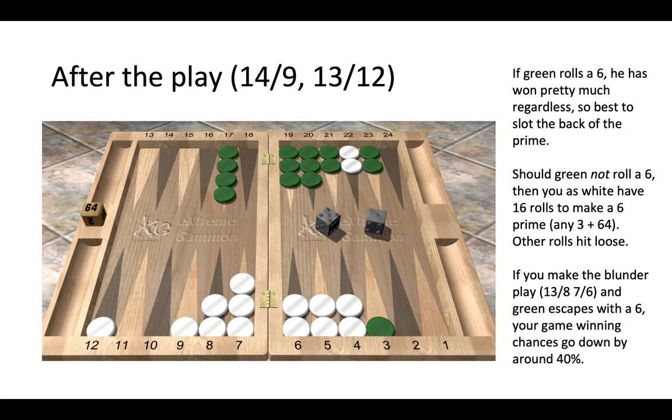So 25 out of 36 times, green is not rolling a six. If that happens, we as white have 16 rolls to make a six prime. If we make the blunder play 13 to 8, 7 to 6, and then green does escape with a six, our game winning chances as white actually drop by around 40 percent. You can see slotting the back of the prime—you are playing to win. As a general rule of thumb, if you have a five prime, it's always good to slot the back of the five prime. But with a four prime, it's often correct to play safer. Here we are taking a small risk by making that slotting play, but if green doesn't roll a six, we are in a very strong position and moving towards an efficient cube ourselves.